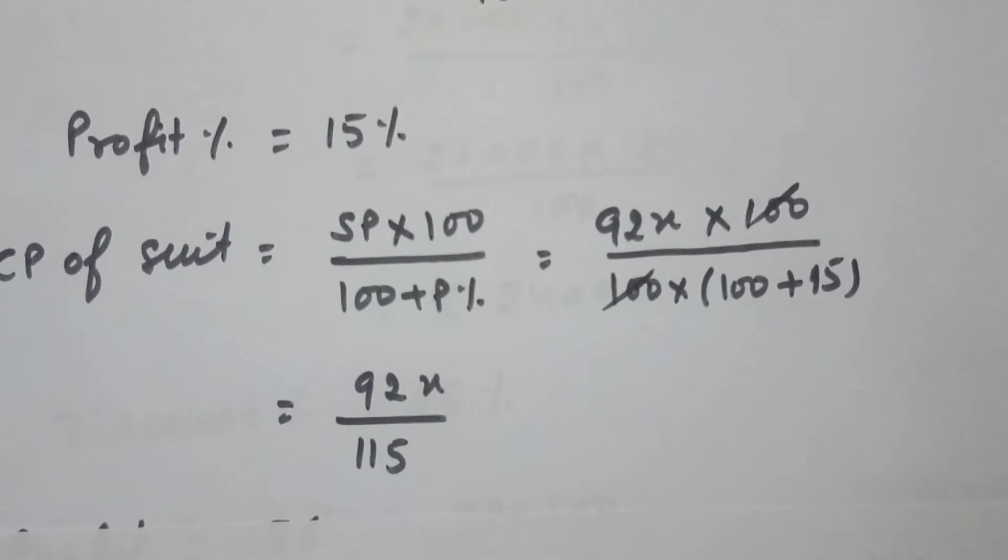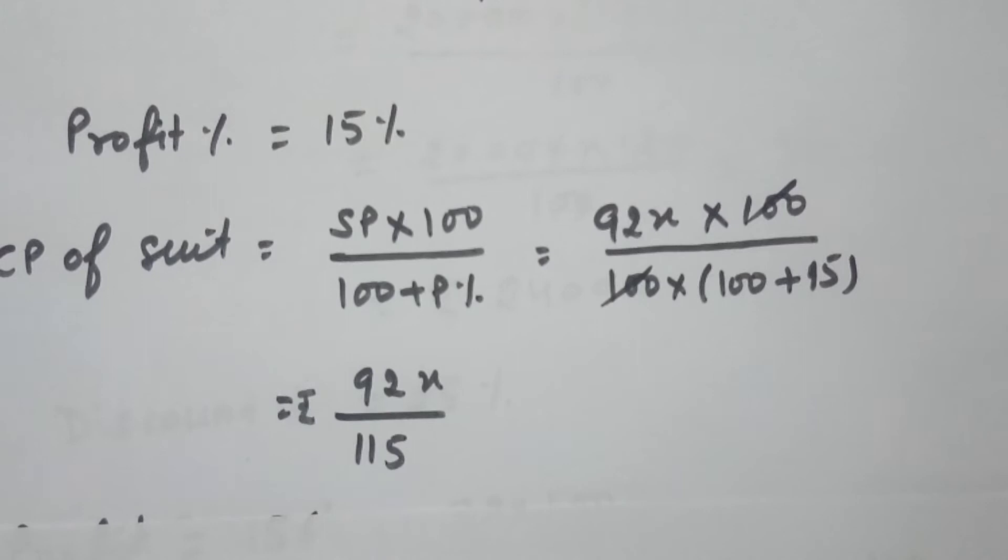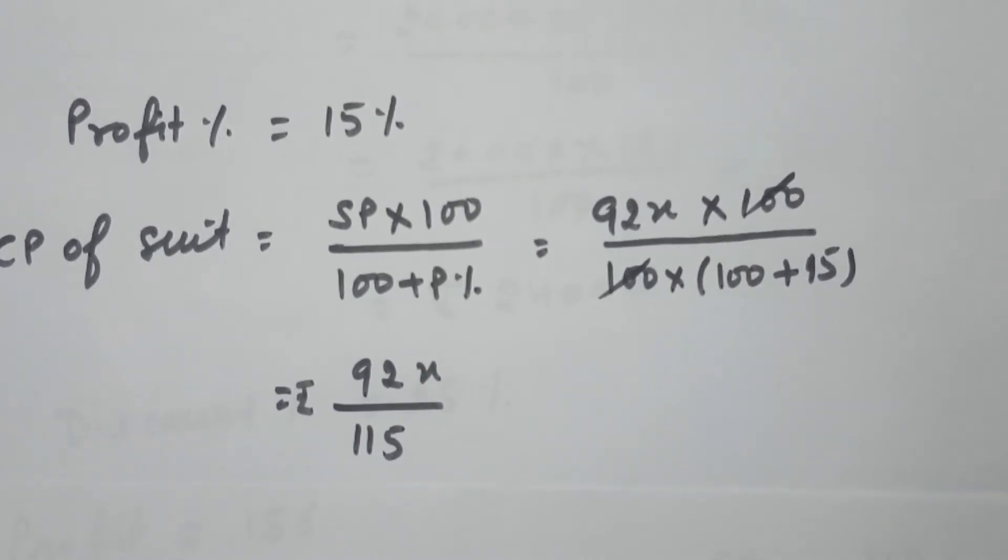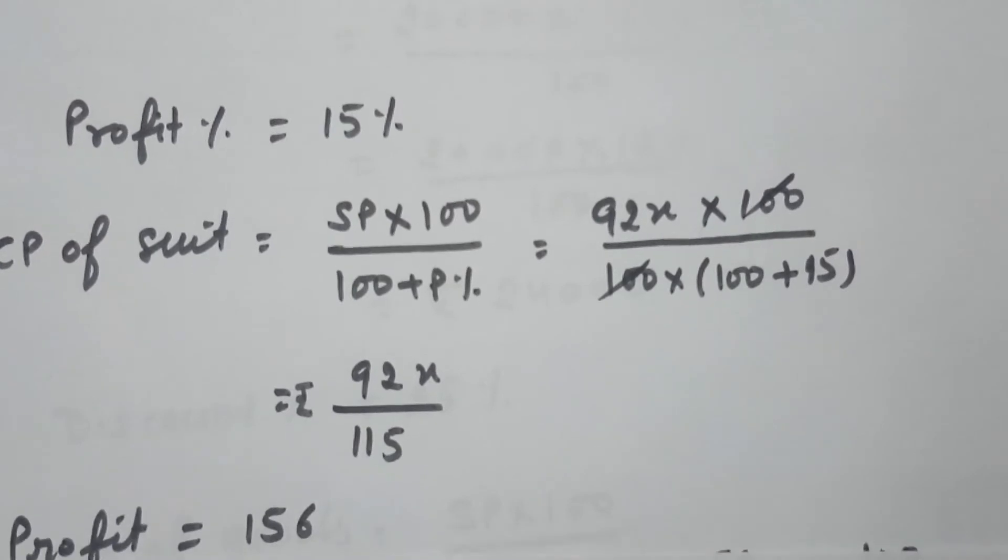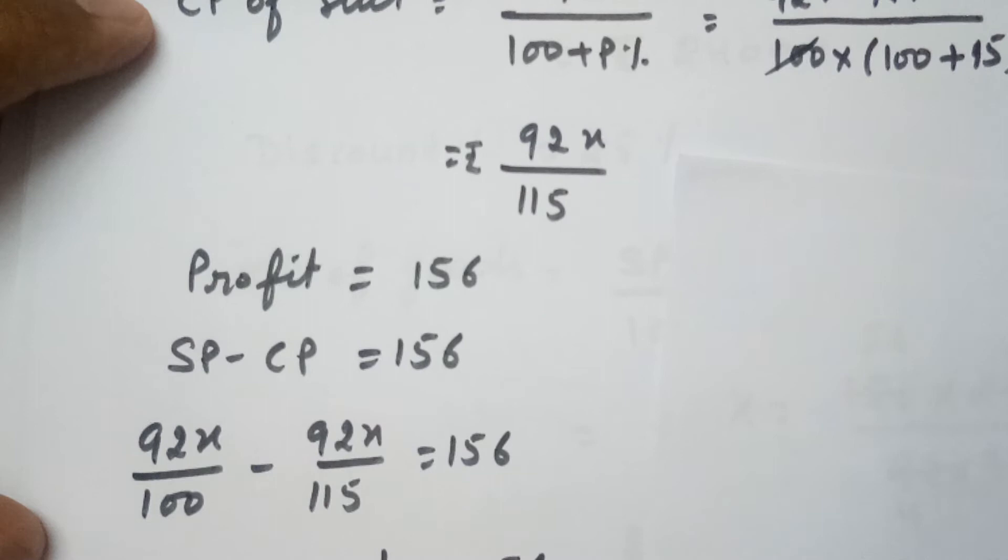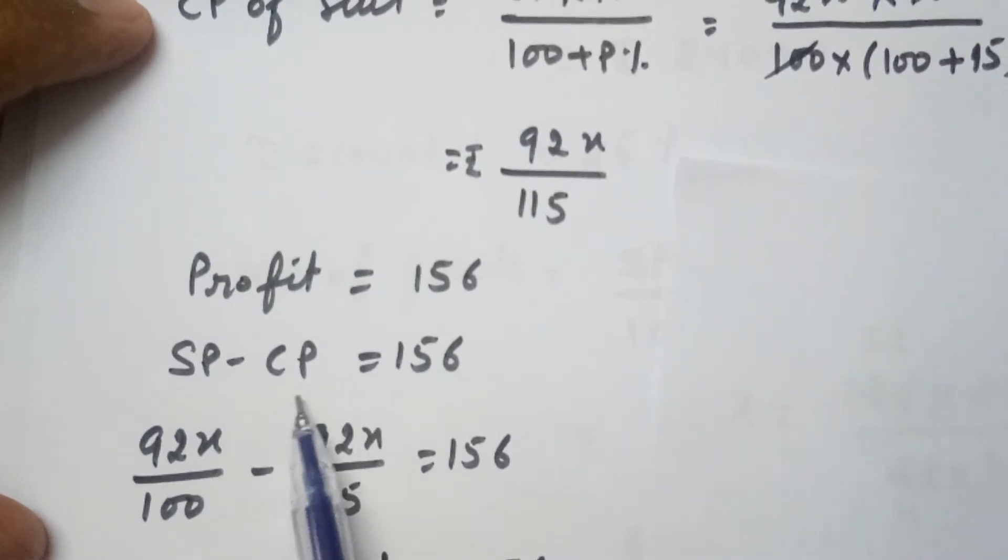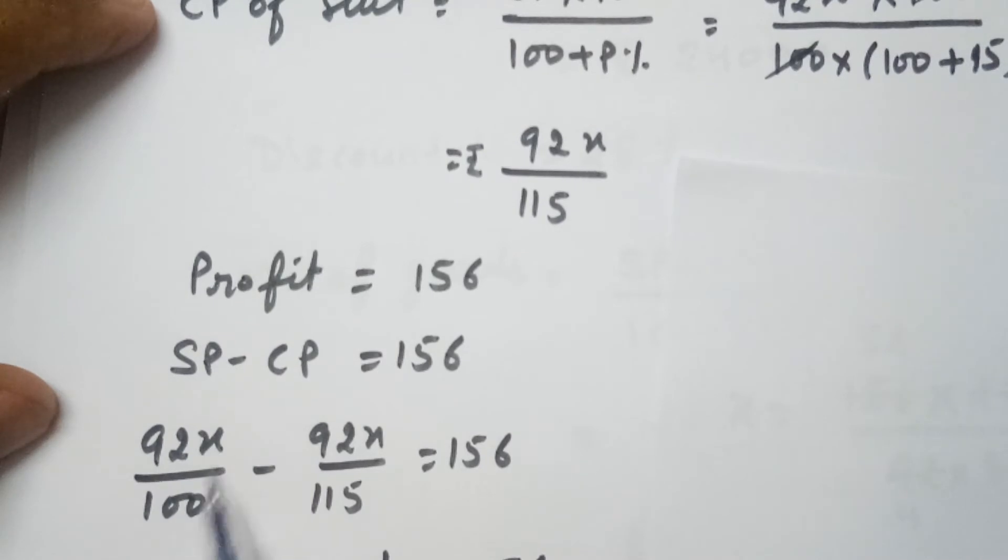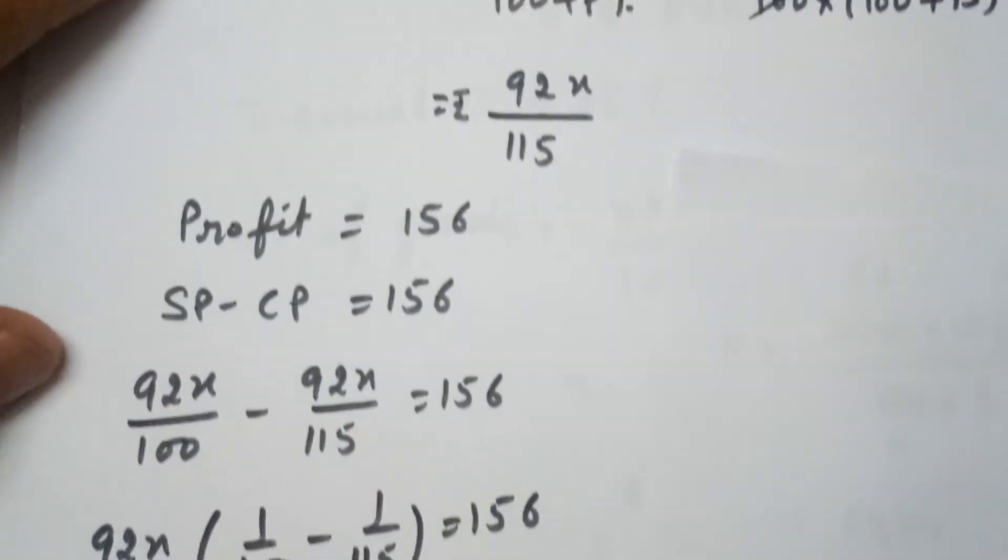So this is the cost price of the suit, 92X over 115. Now it is given that there is an overall gain of Rs 156. So profit is Rs 156 and profit is calculated as SP minus CP equals to 156. SP is 92X over 100 and CP is 92X over 115 which equals to 156.